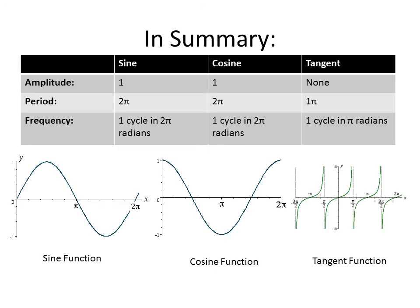In summary, sine and cosine both have the same amplitude, period, and frequency — an amplitude of one and a period of 2π. The biggest difference is the starting locations: sine starts at zero, while cosine always starts at its highest value. Tangent has no amplitude and has a period of π instead of 2π. This serves as a great introduction to understanding the sine, cosine, and tangent functions, and concludes our lesson about their graphs.